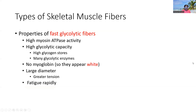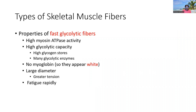For fast glycolytic fibers, at the other end of the spectrum, these fibers are fast in their speed and their main ATP source is anaerobic glycolysis. They're going to have high myosin ATPase activity, meaning a fast rate of contraction, and they're going to have high glycolytic capacity. For that to be true, they have to have a lot of glycogen stores as a substrate for glycolysis, and a lot of glycolytic enzymes to carry out those enzymatic reactions.